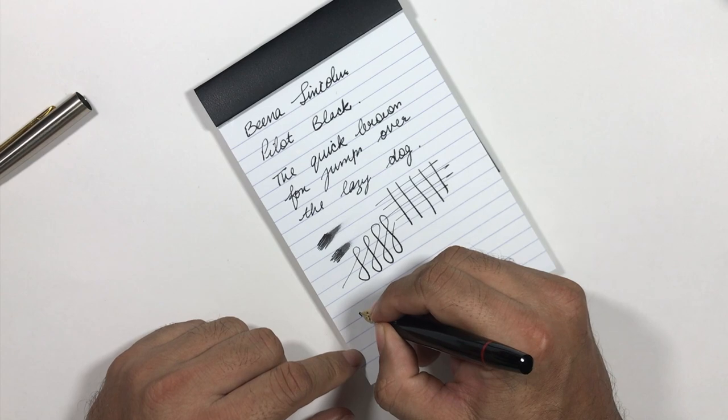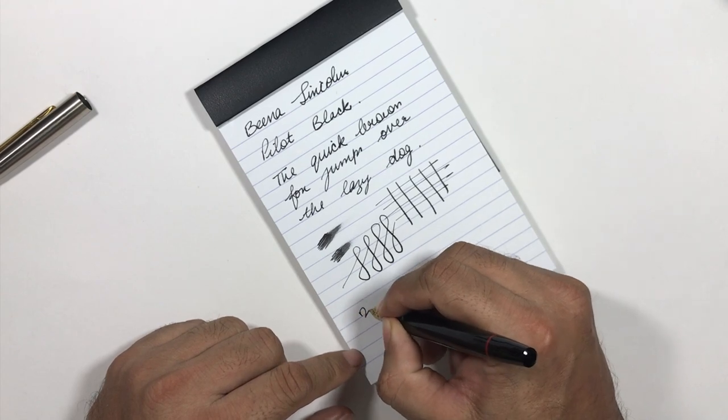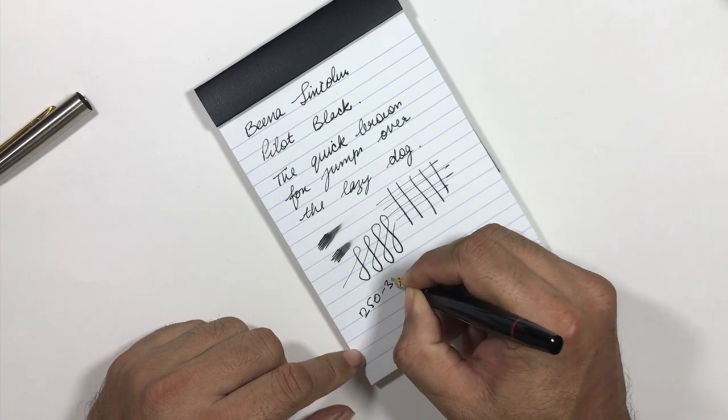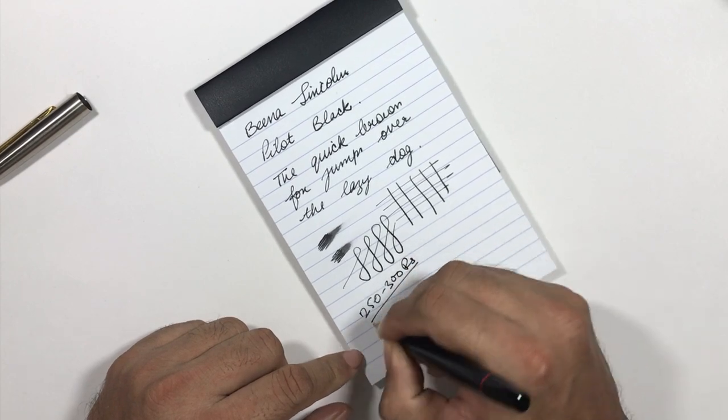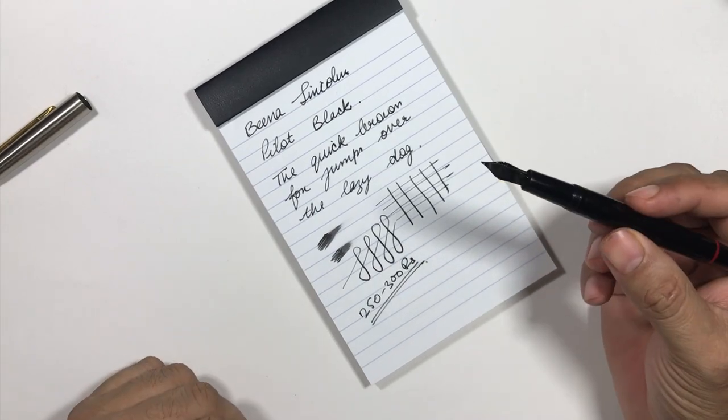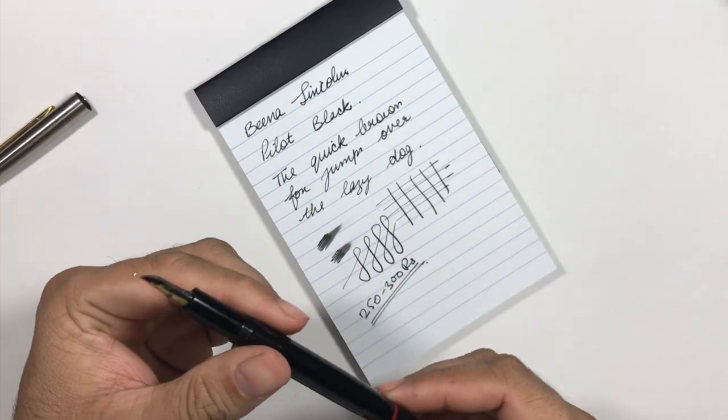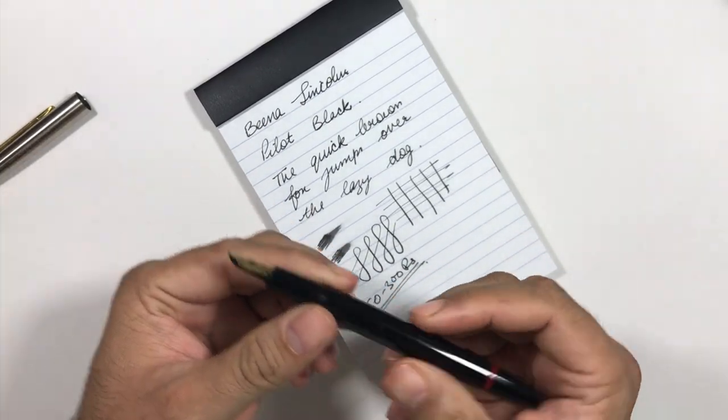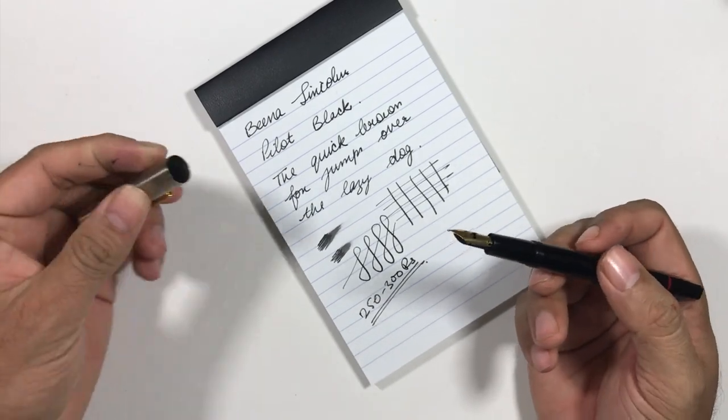Now the surprising fact: the price of this pen ranges between 250 to 300 Indian rupees. This is the biggest surprise here—you get an ebonite feed, piston filler, and a very good writer for 300 rupees.